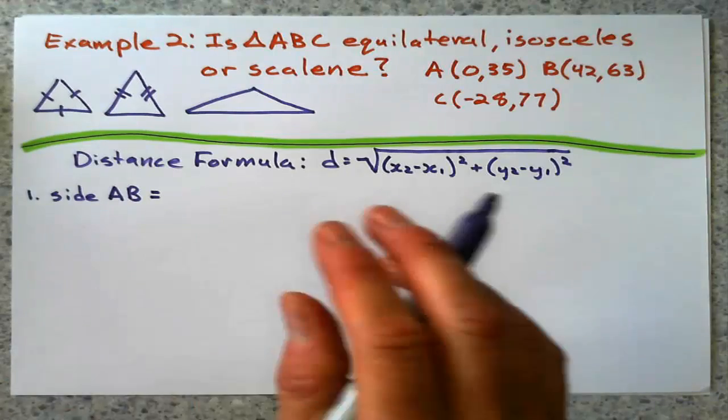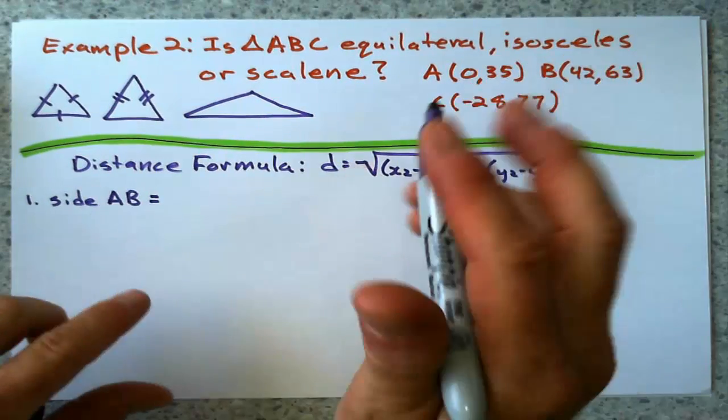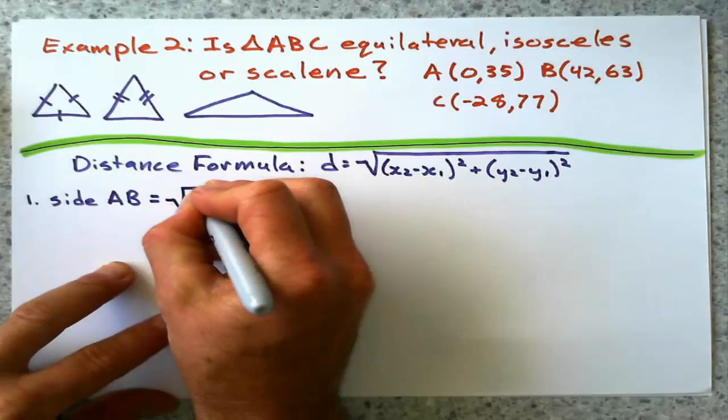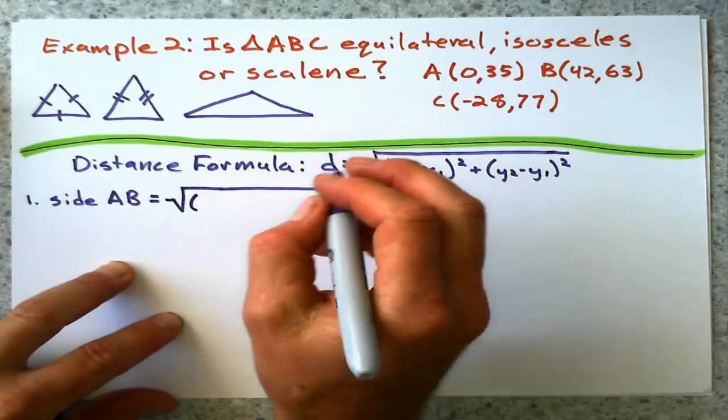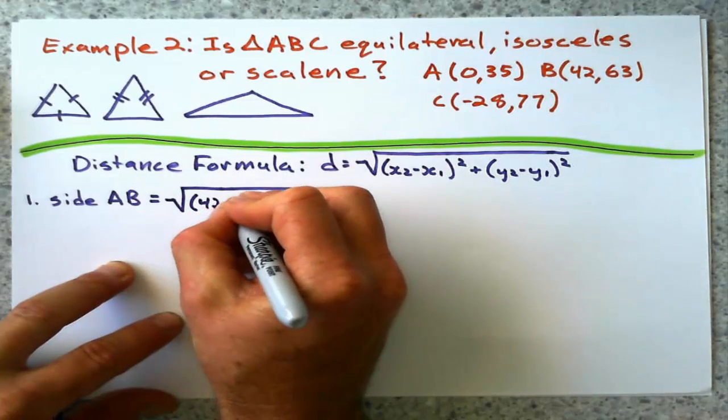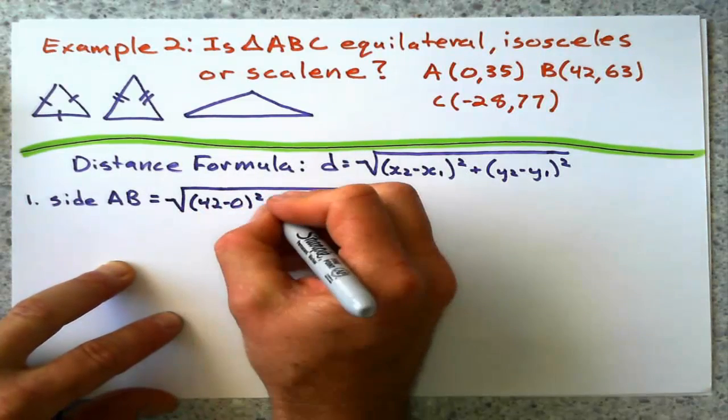Now this is a lot of substitution in here, but we can handle it. Side AB. Don't forget to do everything under the square root symbol. Side AB. Change in x is going to be 42 minus 0. 42 minus 0 squared